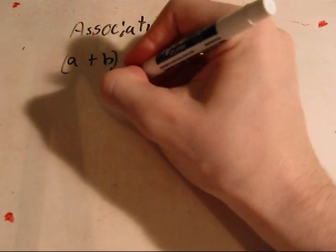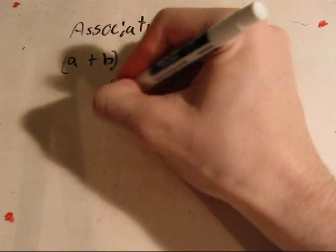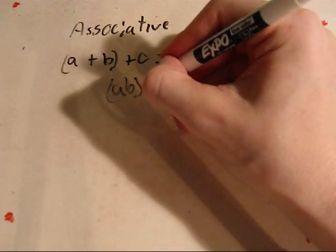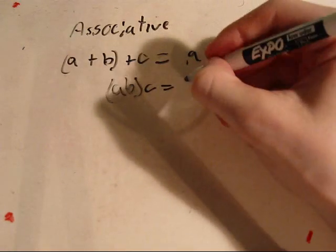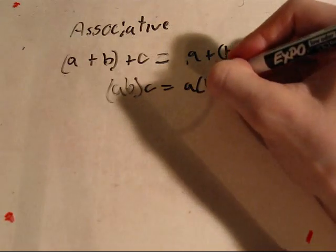Same works with multiplication. Quantity of a times b times c is still equal to a times the quantity of b times c.